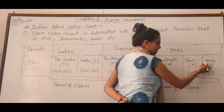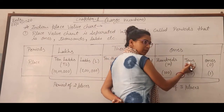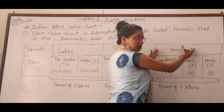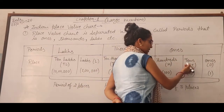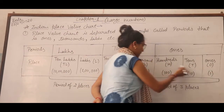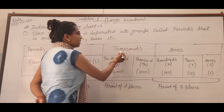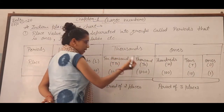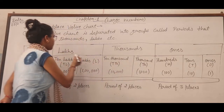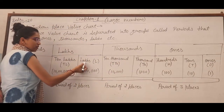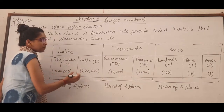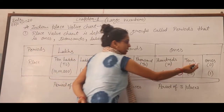Once Period में Once Place, Tenth Place और Hundred Place आता है. Thousand Period में Thousand and Ten Thousand आता है. And Lags Period में Lags and Ten Lags आता है.